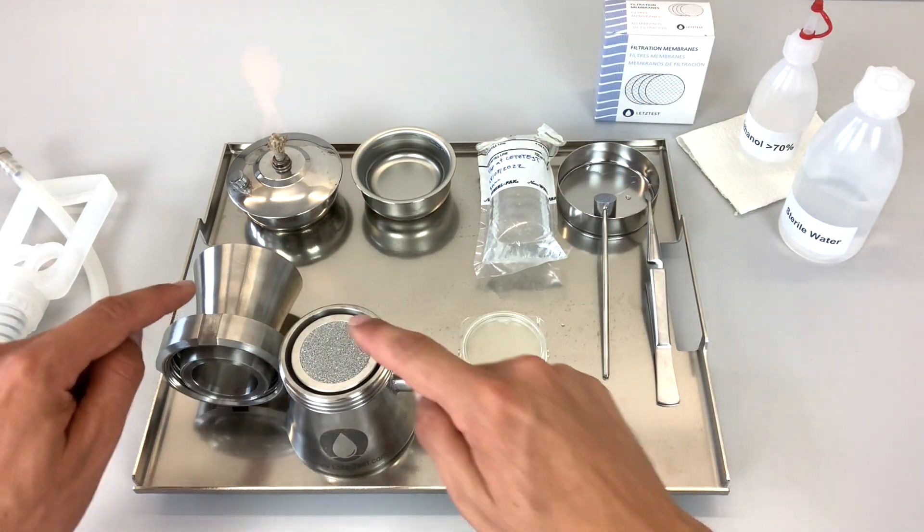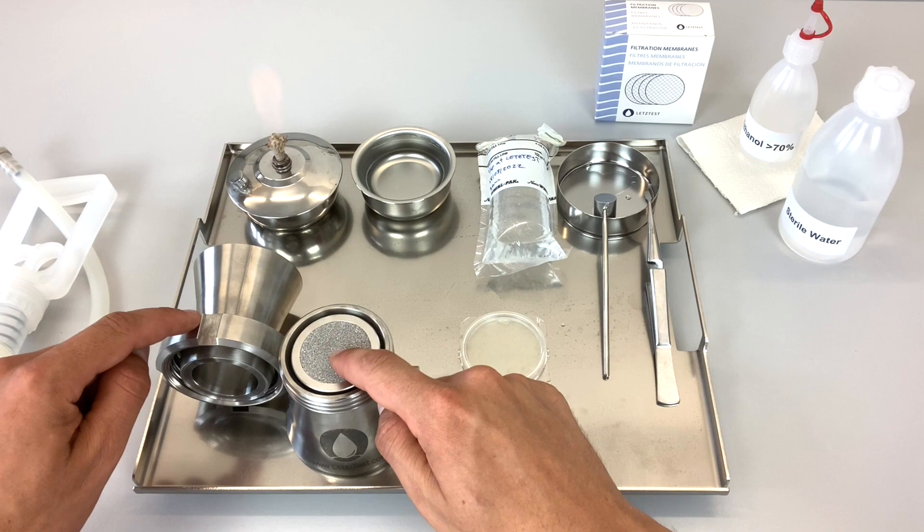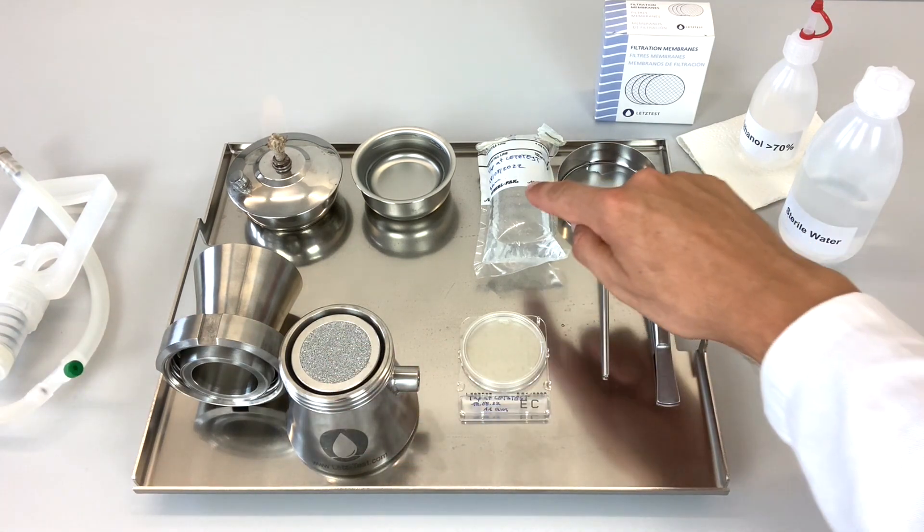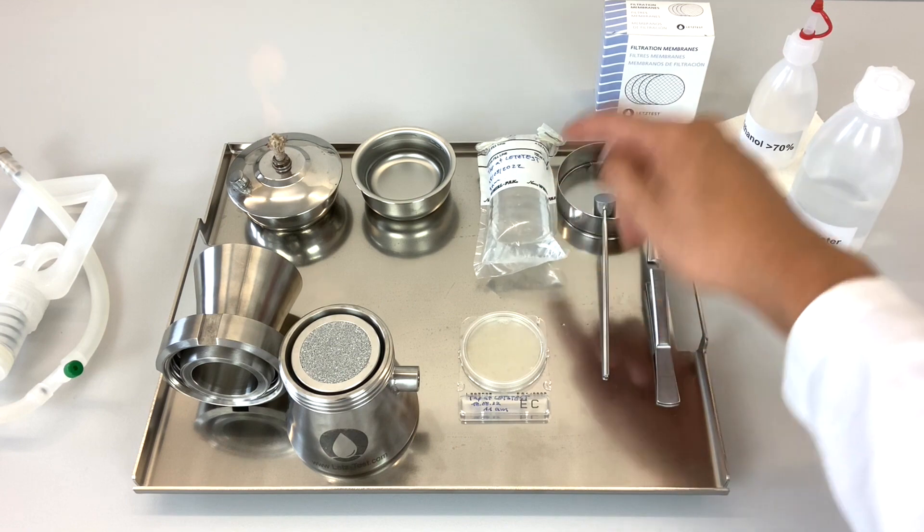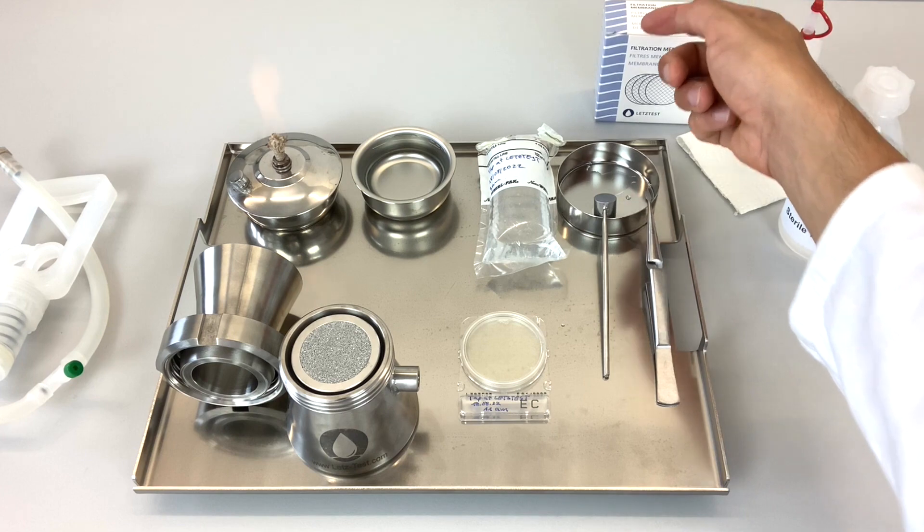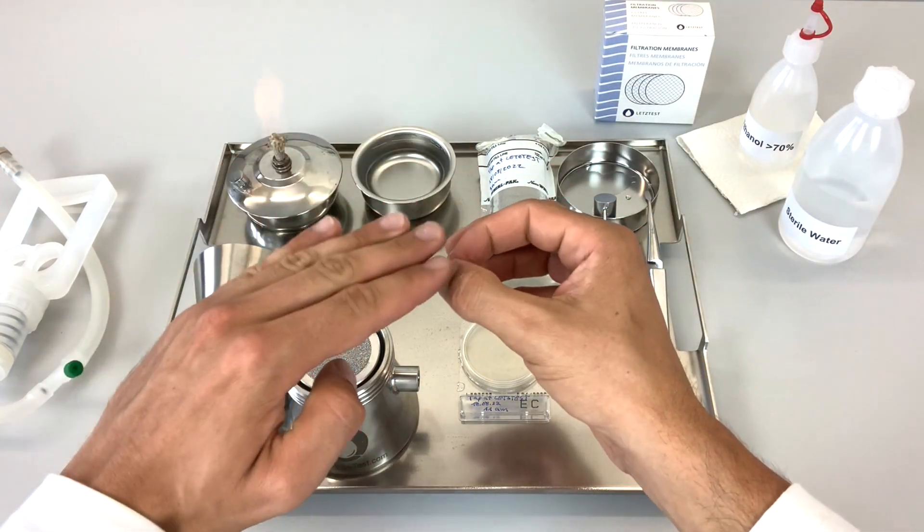The next step is to sterilize the two critical parts of the membrane filtration unit and then filter 100 milliliters of the first water sample through a paper membrane to collect all bacteria from the water sample on the surface of the membrane. The paper membrane is then transferred to the activated chromogenic media plate.